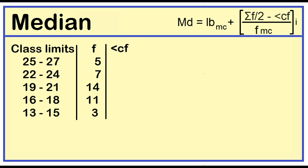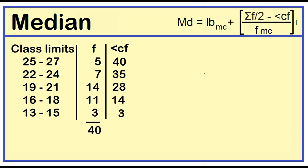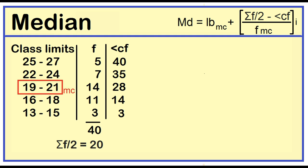Let's add a column for the less than cumulative frequency. Copy the frequency of the lowest class interval, then add the frequencies successively. The lowest class interval is 13 to 15 and the frequency is 3. Then: 3 plus 11 is 14, 14 plus 14 is 28, 28 plus 7 is 35, 35 plus 5 is 40. The total frequency is 40 and one-half of 40 is 20. The smallest cumulative frequency greater than or equal to 20 is 28, meaning our median class is 19 to 21. The frequency of the median class is 14 and the cumulative frequency of the lower class next to the median class is 14.